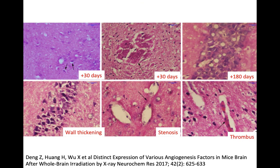If you look at the histology of radiation necrosis, there was a very nice study done in mice. Initially there is cell swelling and vacuolization of cells, and after a few months there are mainly vascular changes, such as wall thickenings, stenosis in the vessels, and the formation of thrombi in the vessels.